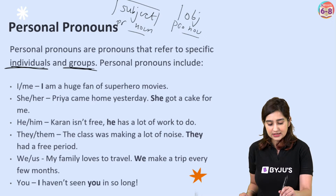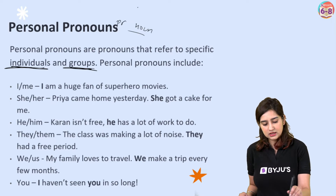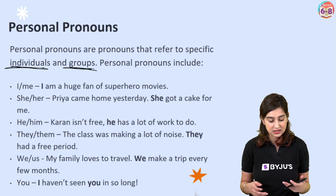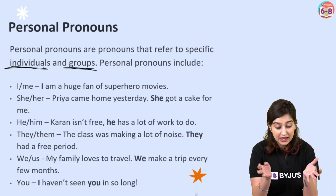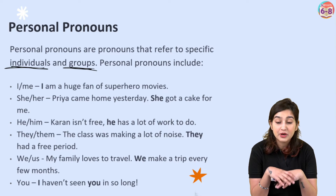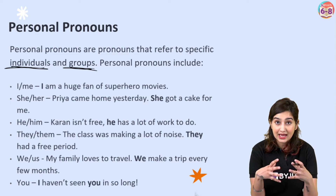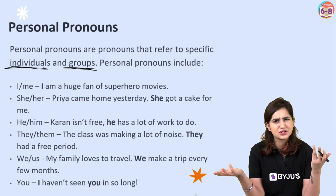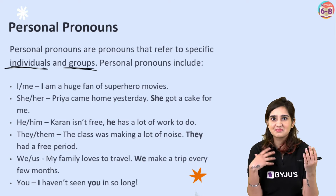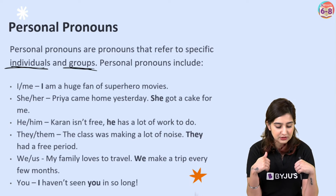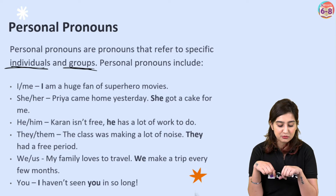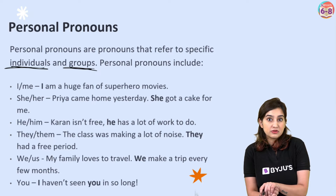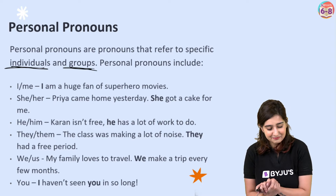Let's look at examples. I and me: 'I am a huge fan of superhero movies.' I over here is the speaker — we usually don't refer to ourselves in third person. An example of the object pronoun: 'Would you like to watch a superhero movie with me?' She and her: 'Priya came home yesterday. She got a cake from me.' She is replacing the noun Priya. 'I gave her a hug.' Here 'her' is the object pronoun.